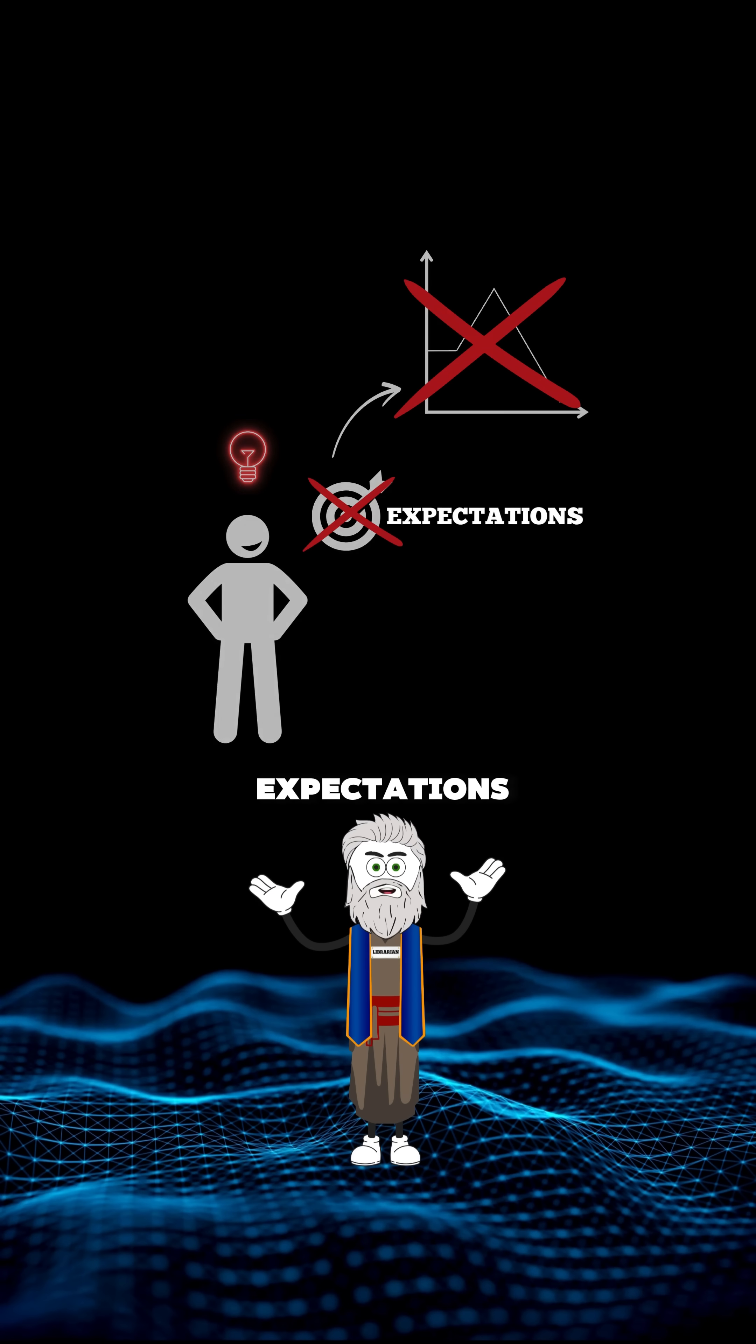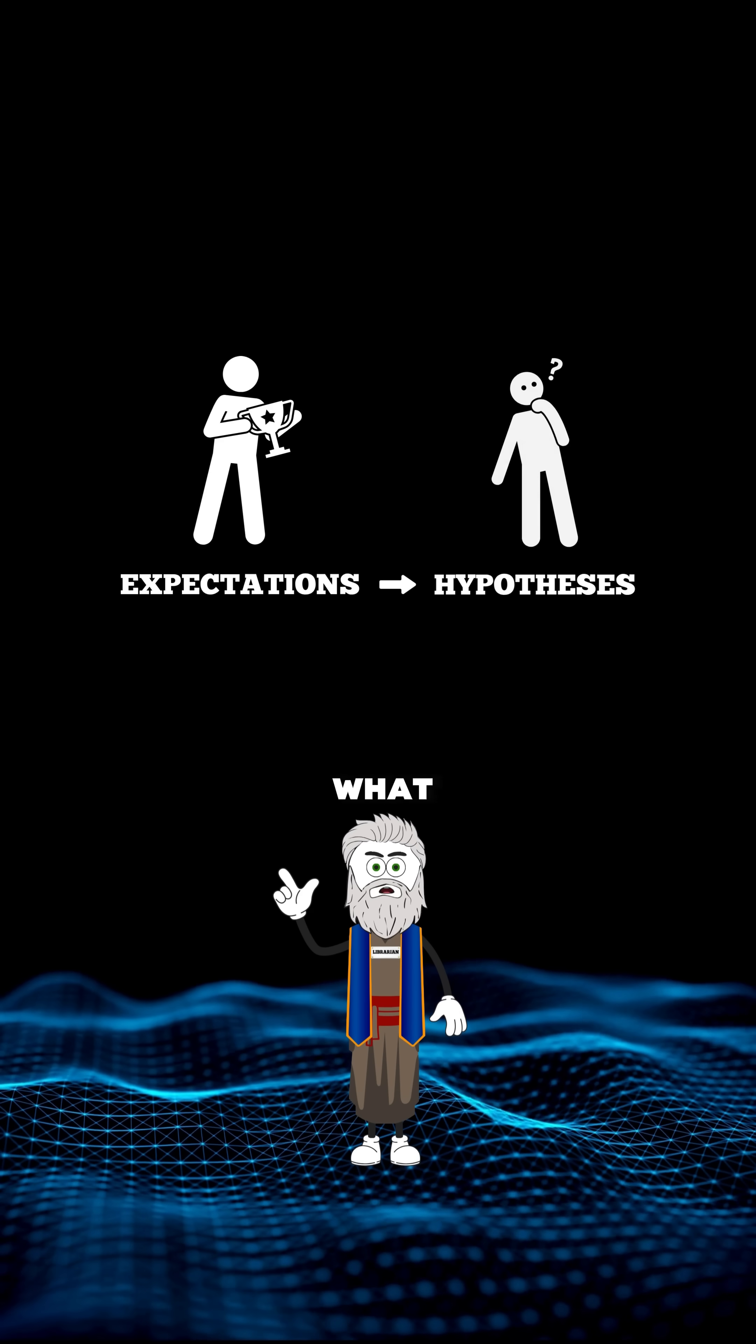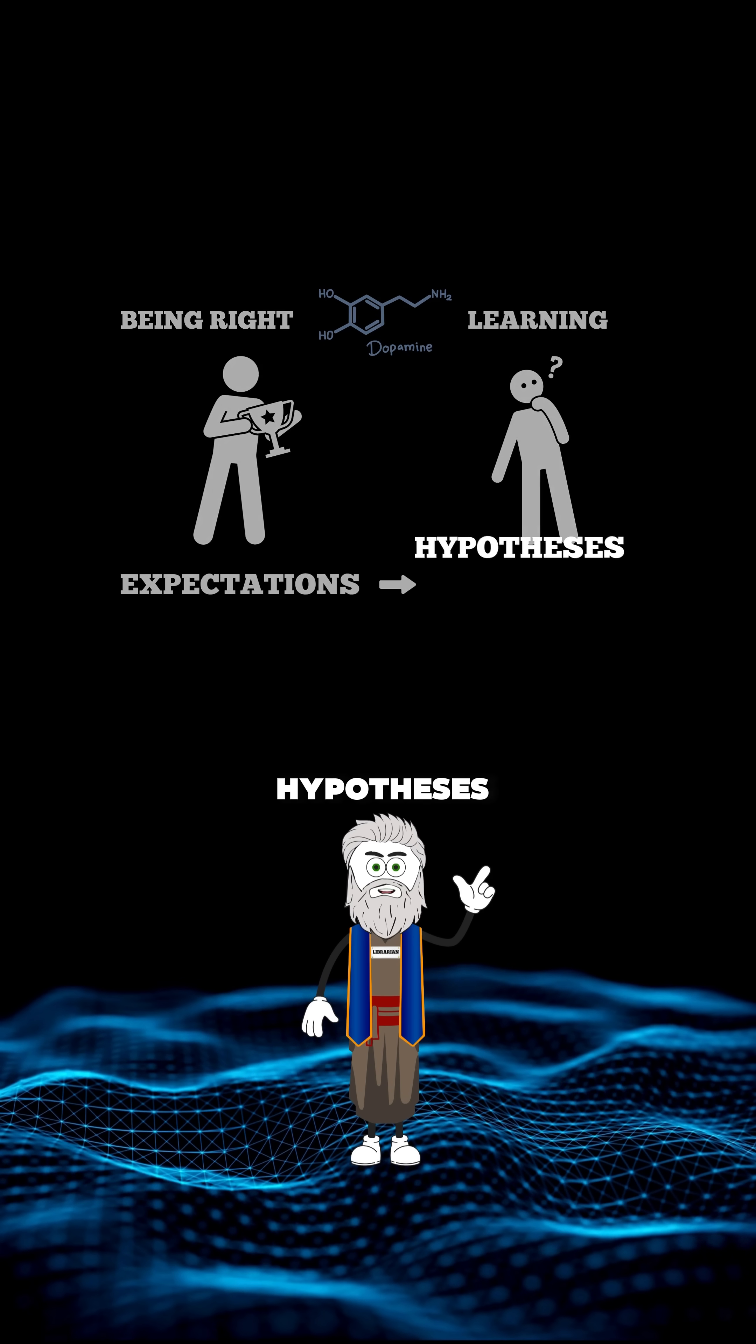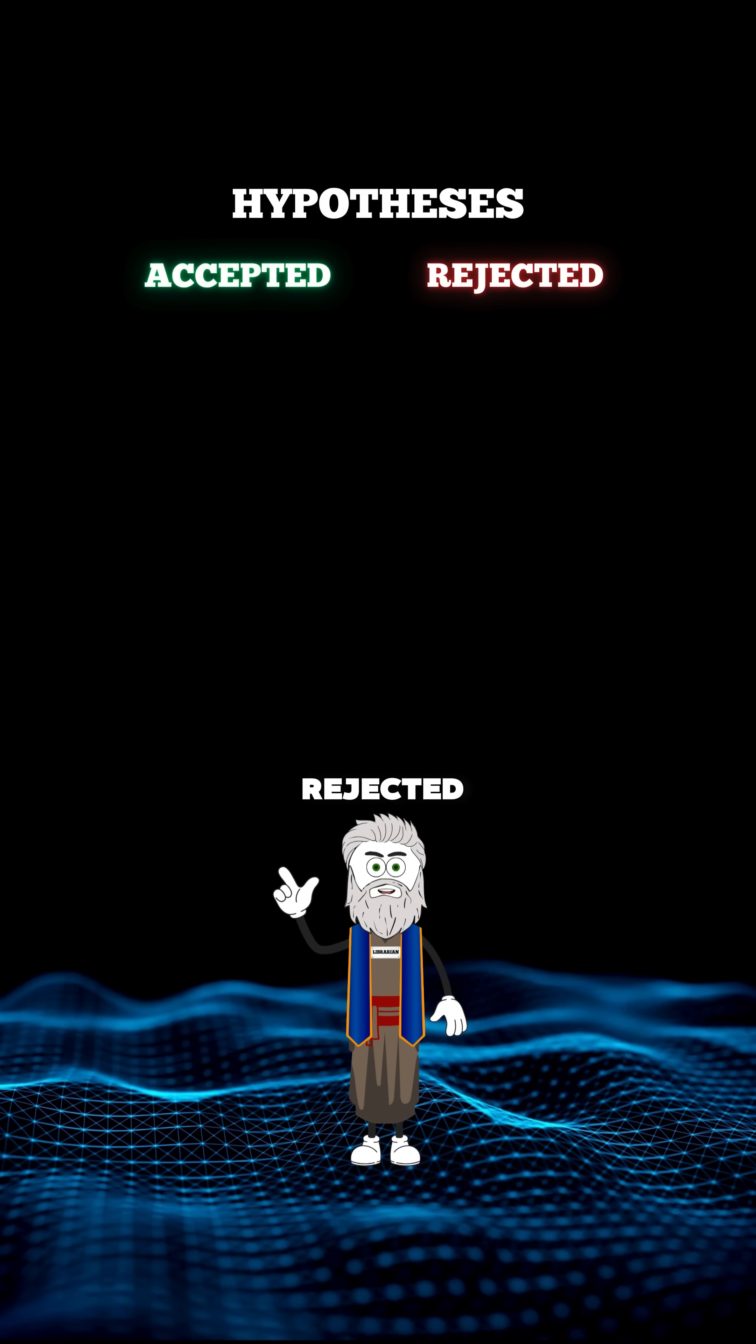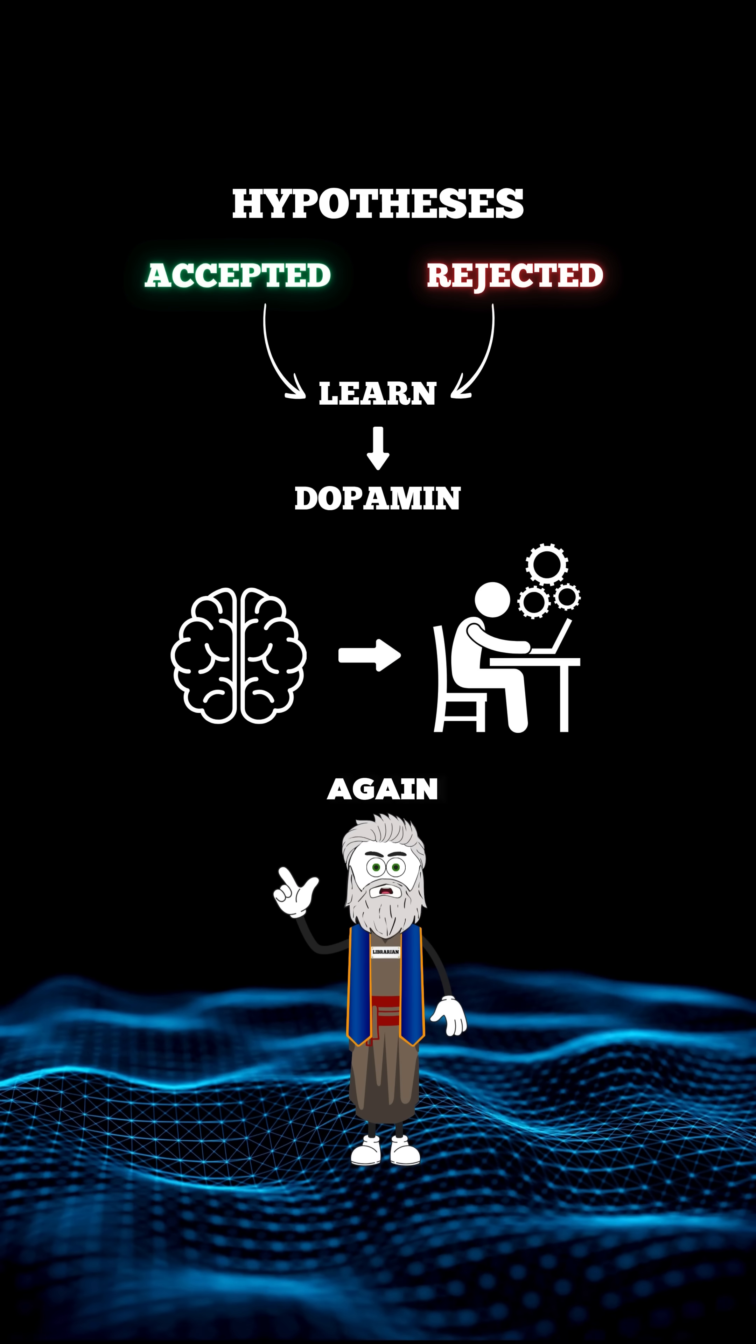That's why your expectations need to become hypotheses. It's no longer about achieving something, it's about observing what happens. The dopamine release is now linked to learning, and no matter if your hypothesis is accepted or rejected, you learn. This process gets rewarded, and your brain starts supporting you trying over and over again.